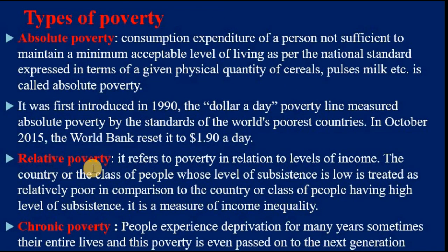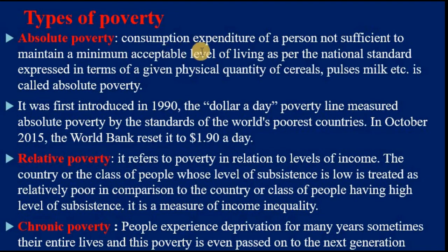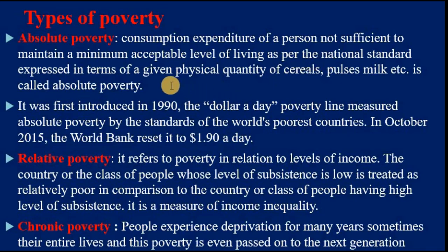Now, what are the types of poverty? We are going to learn different types: absolute poverty, relative poverty, and chronic poverty. Absolute poverty is when the consumption expenditure of a person is not sufficient to maintain the minimum acceptable level of living as per the national standard.